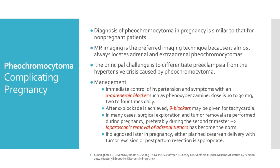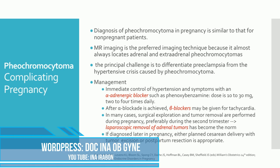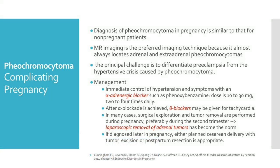The diagnosis of pheochromocytoma in pregnancy is similar to that for non-pregnant patients. MRI is the preferred imaging technique because it almost always locates adrenal and extra-adrenal pheochromocytomas. The principal challenge is to differentiate preeclampsia from the hypertensive crisis caused by pheochromocytoma. Management begins with immediate control of hypertension and symptoms with alpha-adrenergic blockers such as phenoxybenzamine at a dose of 10 to 30 mg, 2 to 4 times daily. After alpha-blockade is achieved, beta blockers are given for tachycardia. In many cases, surgical exploration and tumor removal are performed during pregnancy, preferably during the second trimester, using laparoscopic removal. If diagnosed later in pregnancy, either planned cesarean delivery with tumor excision or postpartum resection is appropriate.